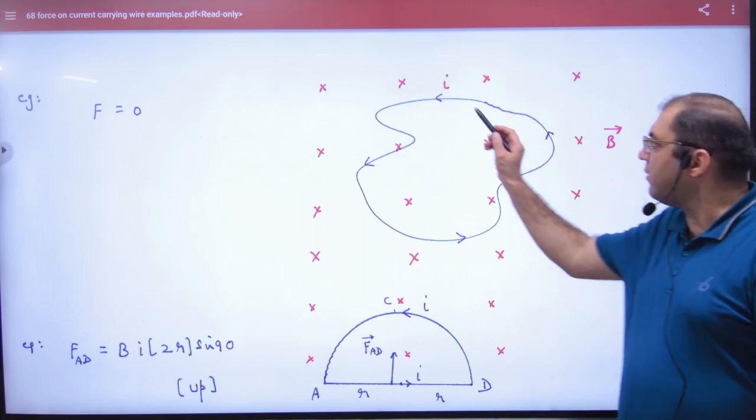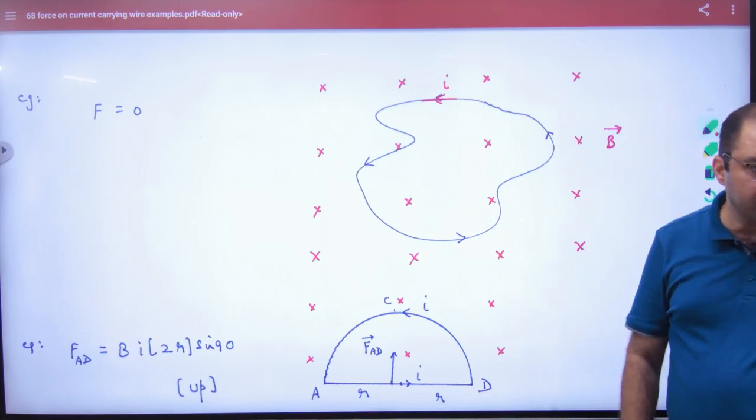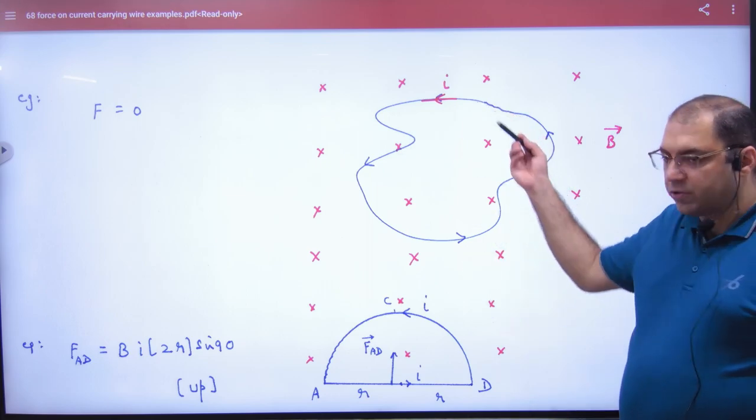Will a small part of this experience force, or is the answer zero? It is a net vector. Individual parts experience force, but the net answer is zero.